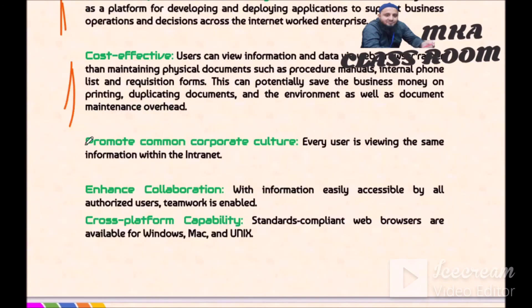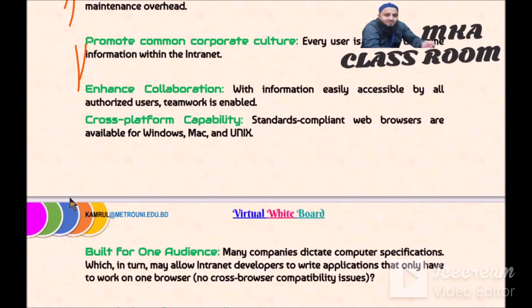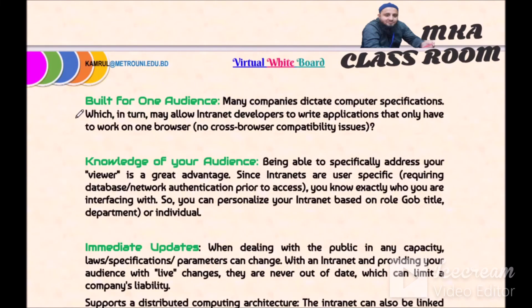Promotion and common corporate culture: every user is viewing the same information within the intranet. Enhanced collaboration: with information easily accessible by all authorized users. Cross-platform capability: standards-compliant web browsers are available for Windows, Mac, and Unix. Build for one: many companies dictate computer specifications, which allows intranet developers to write applications that only need to work on one browser, removing cross-browser compatibility issues.